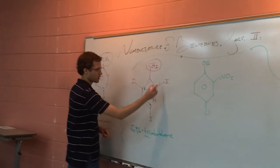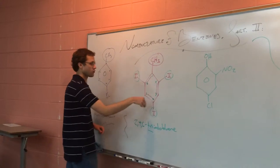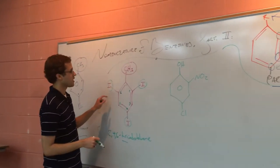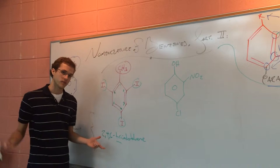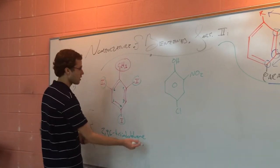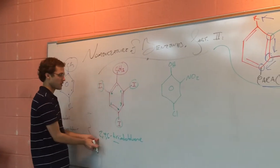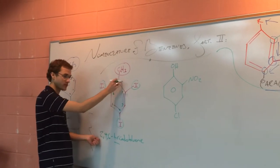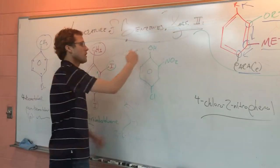Triiodo because we have one, two, three of these iodines, and 2,4,6 because of their positions. We know that with toluene, we don't have to put what number the CH3 group is on, because when we say toluene we know there's a CH3 group and we know it's going to be carbon one, with CH3 being one position away from the first iodine.